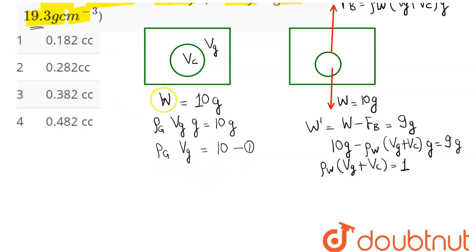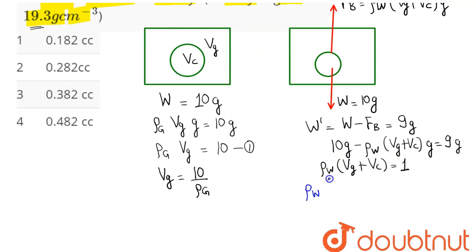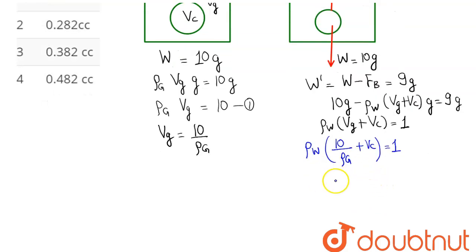We need the volume of the cavity. From equation one, the volume of gold Vg equals 10 divided by the density of gold. Substituting into our equation: ρ_water × (10/ρ_gold + V_cavity) = 1. Therefore, the volume of cavity equals 1/ρ_water minus 10/ρ_gold.